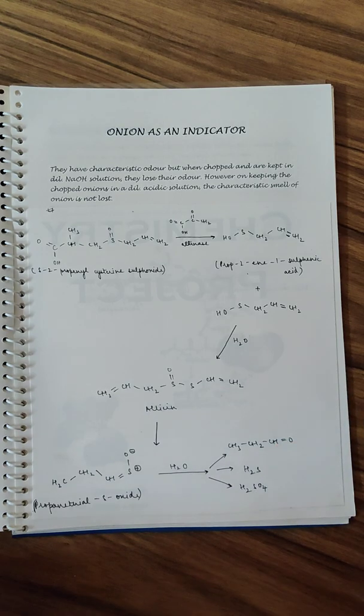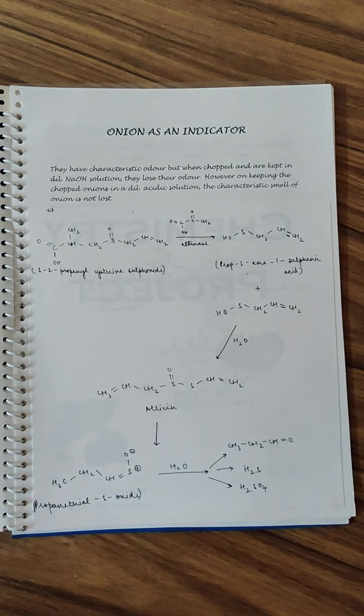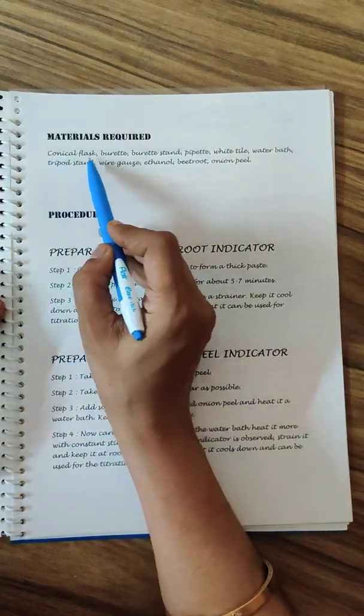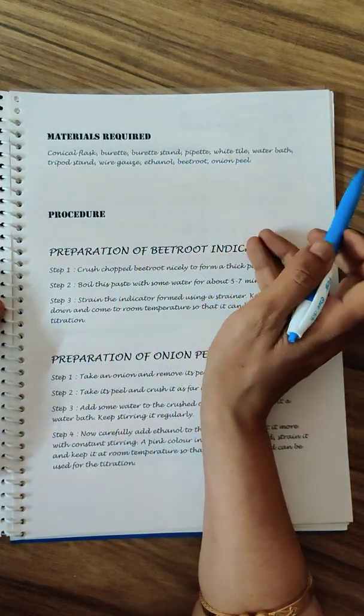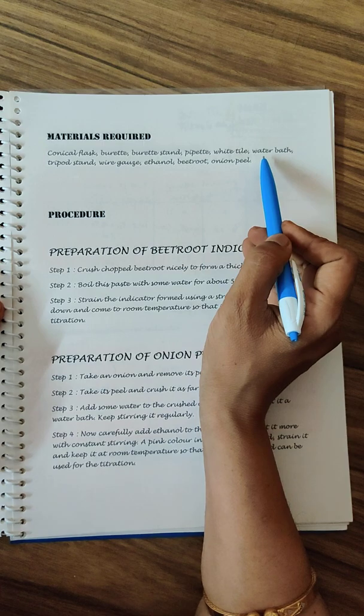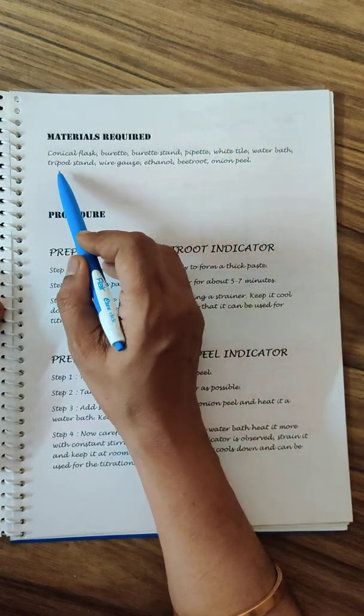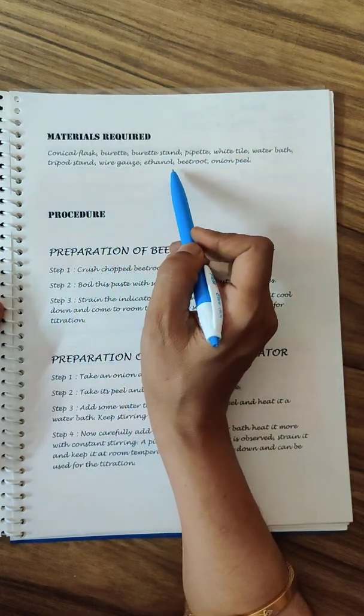Coming to the materials that you require: the flasks, burette stand, pipette, white tile for the color indication, water bath, a tripod stand, wire gauze, ethanol to dissolve beetroot and onion peel.